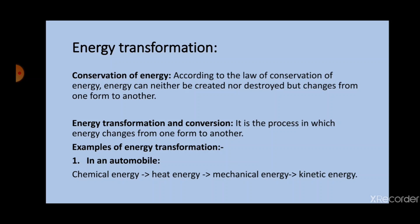The process in which energy changes from one form to another is known as energy transformation and conversion. In this chapter, we have discussed the two types of mechanical energy: kinetic energy and potential energy. Kinetic energy can be converted or changed to any other form of energy, like light energy, sound energy, electrical energy, and so on. Whereas the potential energy can be converted only to kinetic energy.